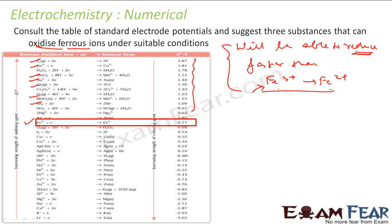Why? You understood. See, Fe3+ to Fe2+, the value is 0.77 volt, right? Anything above this are the ones which can easily get reduced compared to this. They can easily reduce themselves. That means they can oxidize this guy.